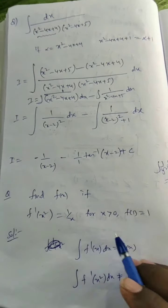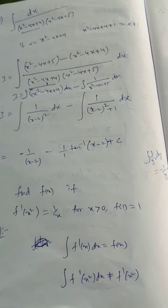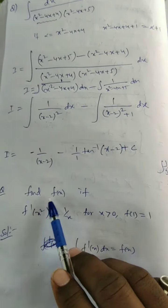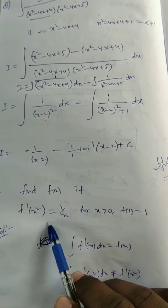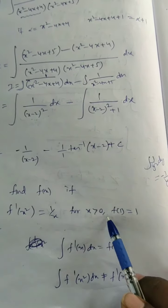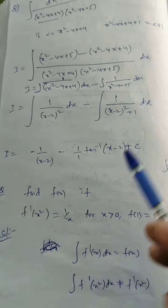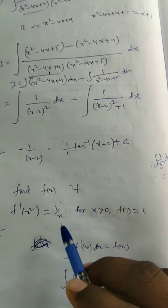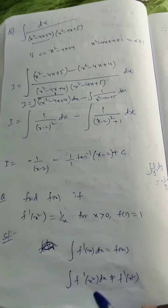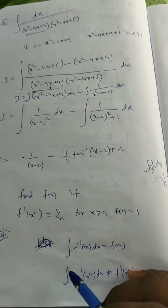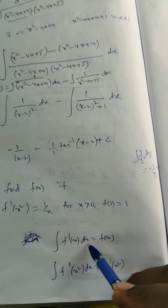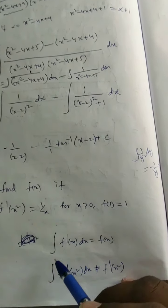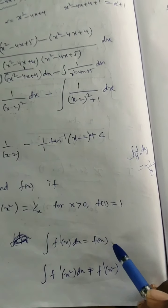Now let's look at an important type of question. Find f(x) if f′(x²) = 1/x for x > 0, and f(1) = 1. You know that ∫ f′(x) dx = f(x) + c. However, ∫ f′(x²) dx ≠ f(x²); when the argument is squared, we cannot directly integrate.